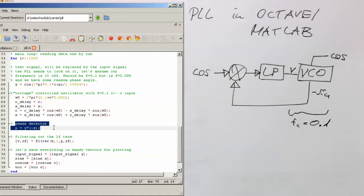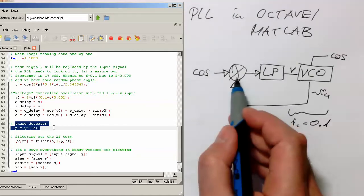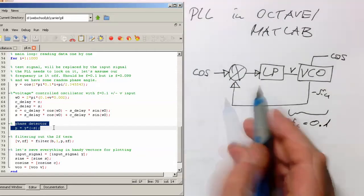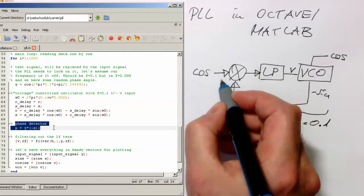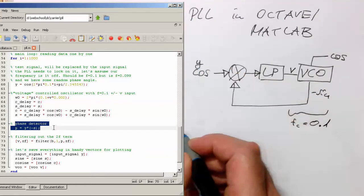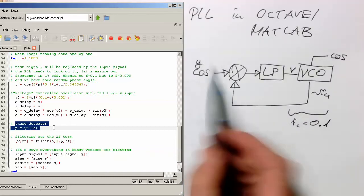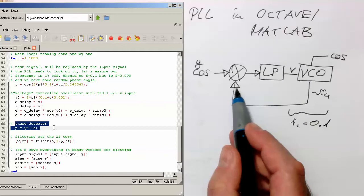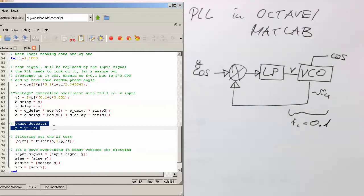Then the next step here is our phase detector. The phase detector is obviously this unit here. So what we do is we take our input signal. So this input signal here is called Y. And this input signal is sent into our multiplication unit and then multiplied by minus sign. So we see this here.